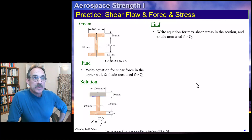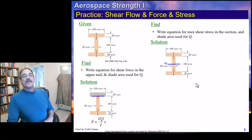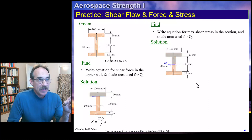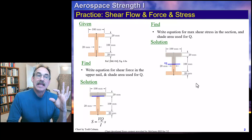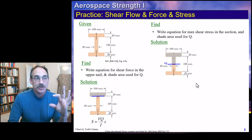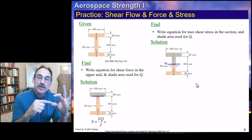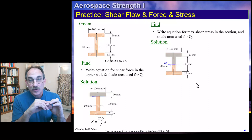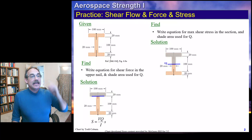If we want to know the maximum shear stress, we calculate Q at the centroid of the section. We draw a line through the centroid and need Q for everything above that. We already calculated Q for the upper flange, so now we just need Q of the web and add it. That web height is 0.05 meters, width is 0.02 meters, and the y-bar to the centroid of that element is 0.05 over 2. We add that Q to the first Q to get total Q for the VQ/I equation.